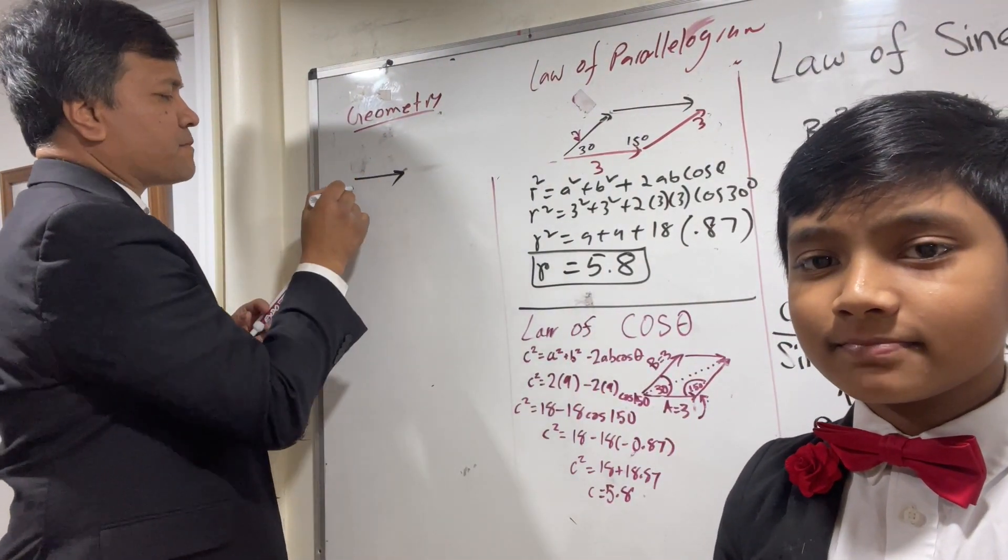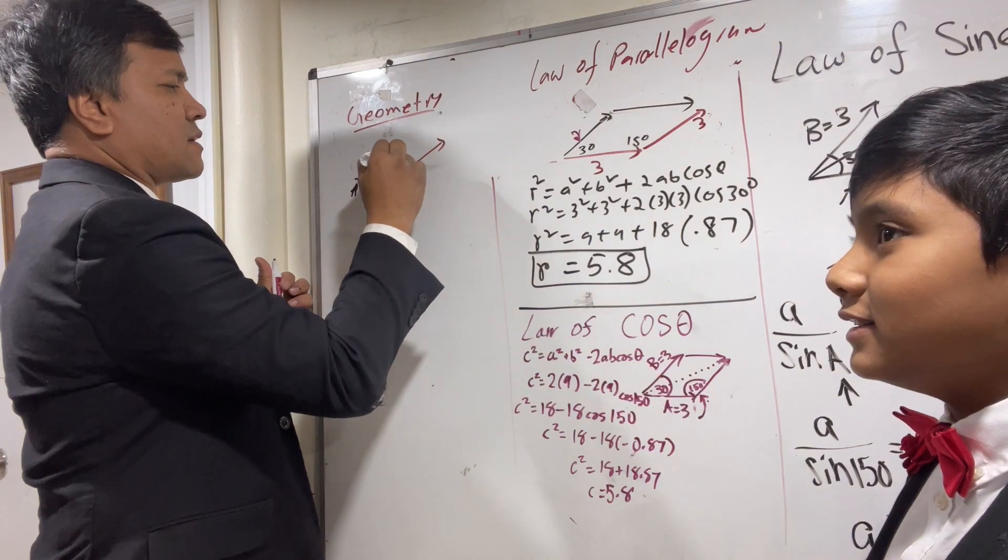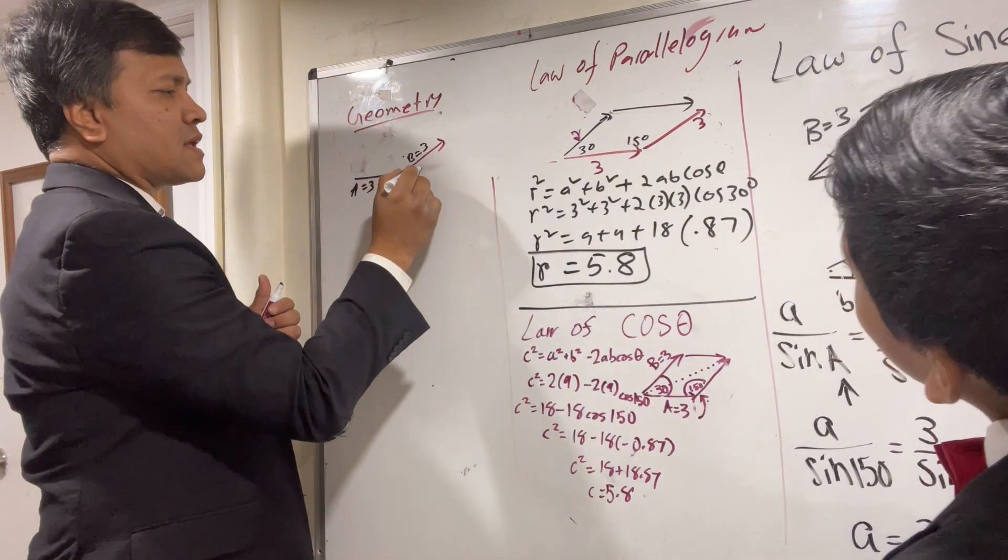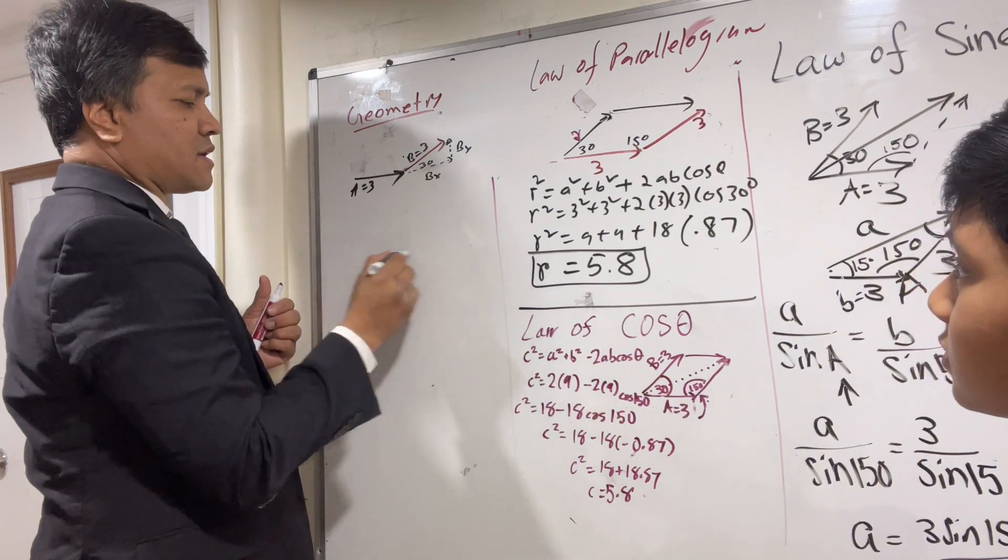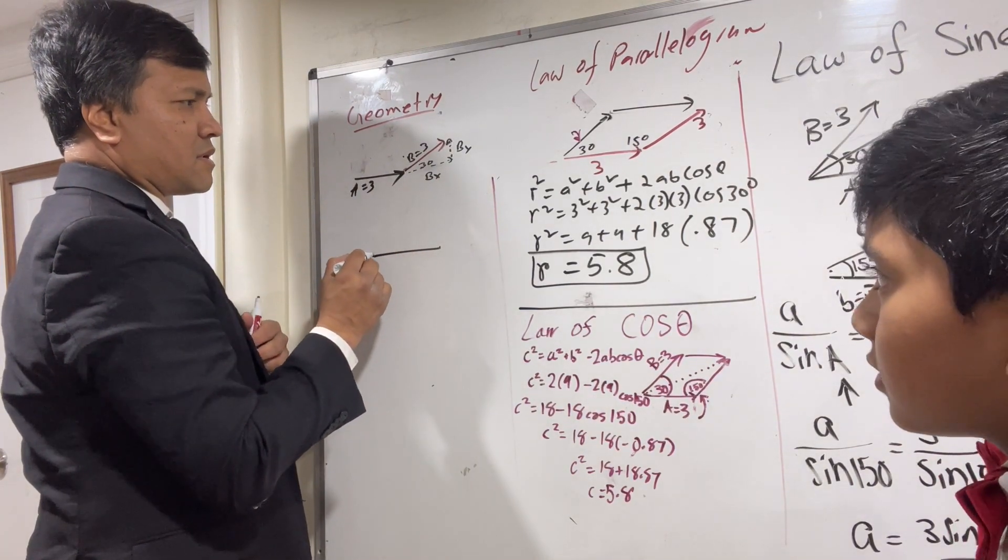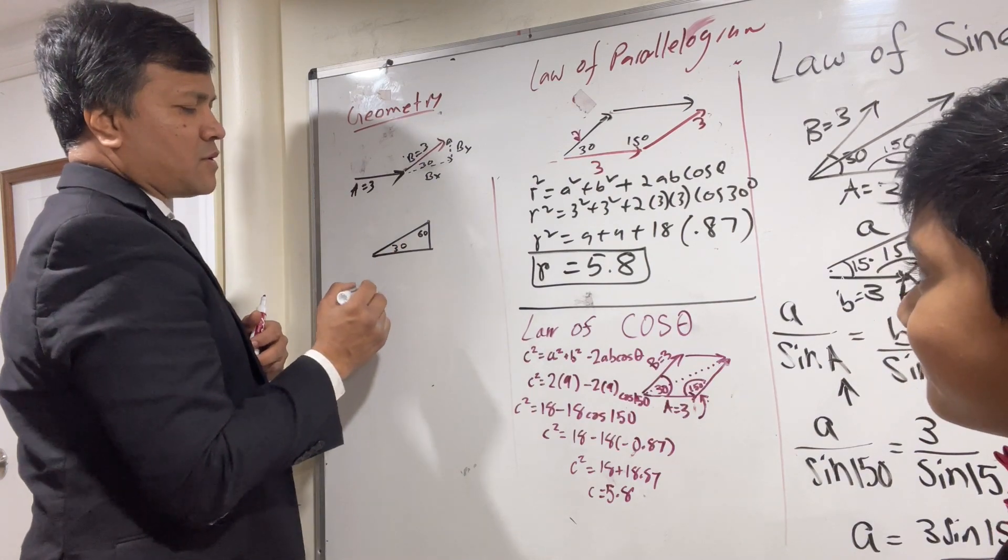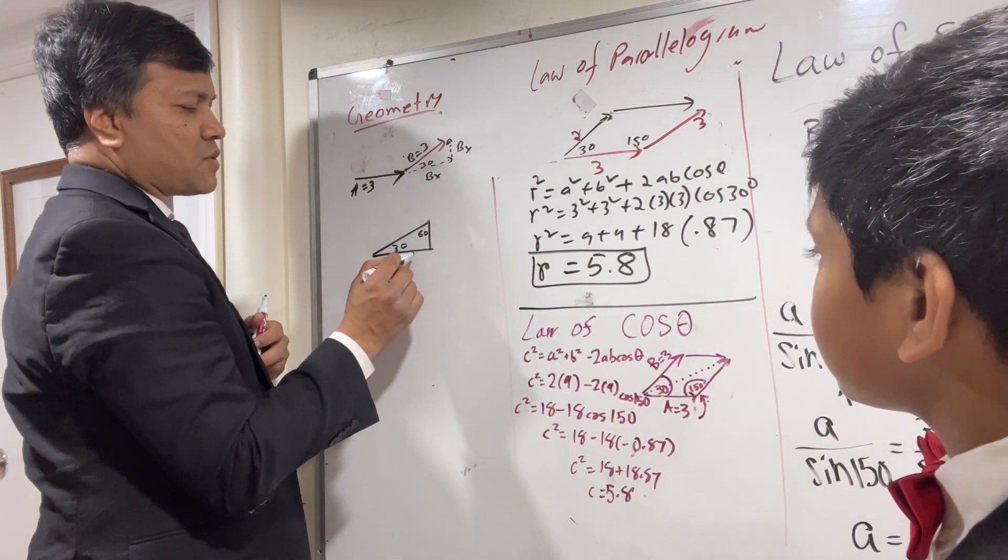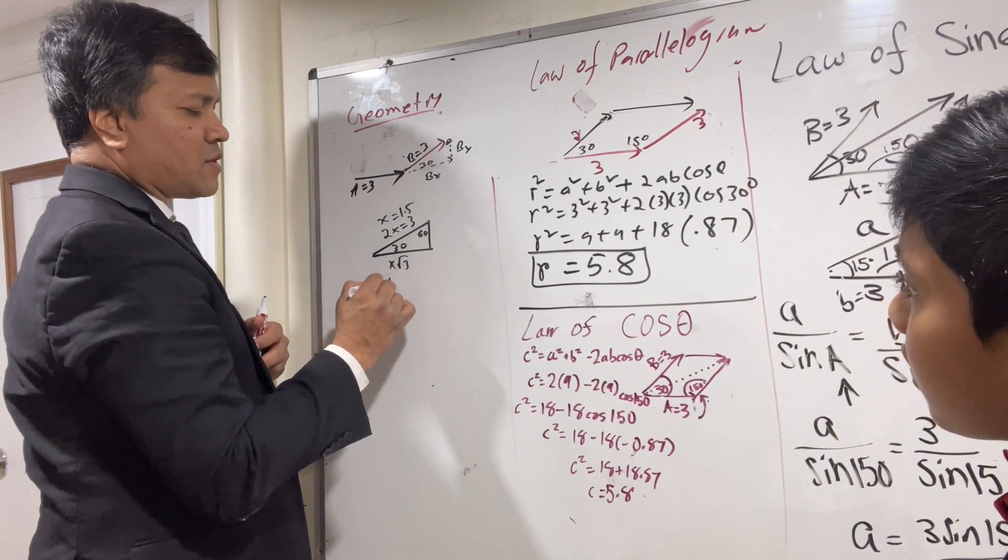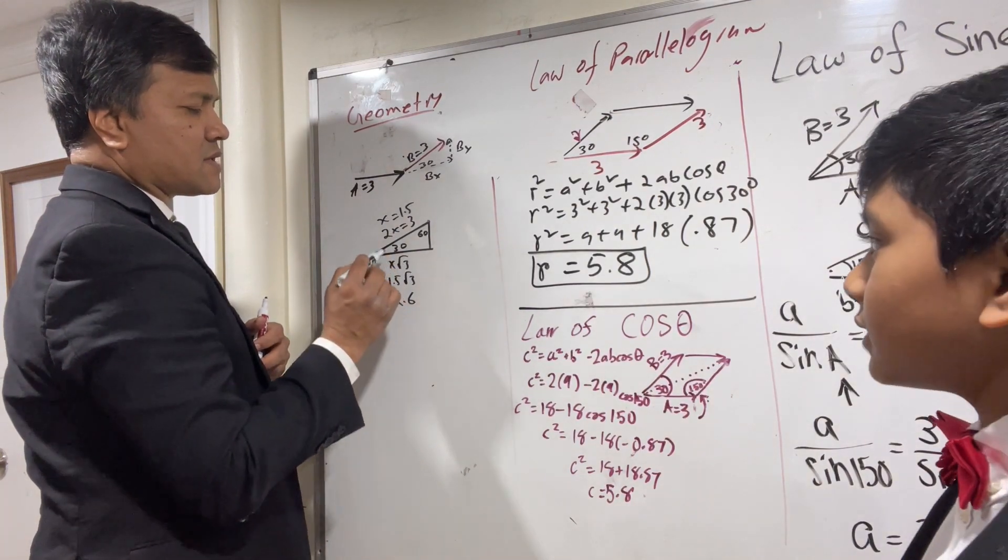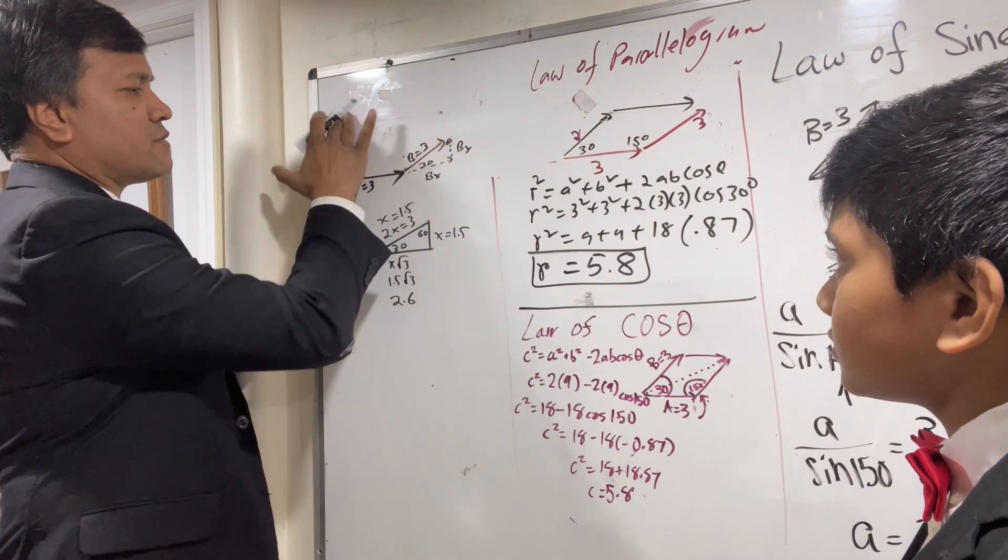I'm not going to take up too much space. So this is 3, this is vector A. And this is 3, this is vector B. So this is the Bx, and this is the By. And this is 30. So that's what we have. So if this is 30, this must be 60. So what are we looking at? This is 90. So 2X is equal to 3. X is equal to 1.5. And this is X root 3, 1.5 root 3, 2.6. And this is X equal to 1.5. Now we are almost done. So I can erase the geometry over here to do the business over here.